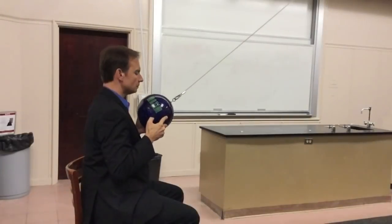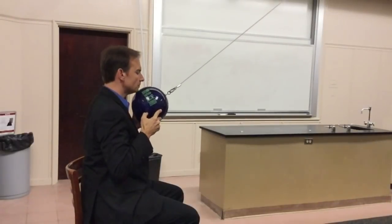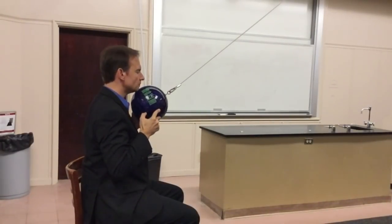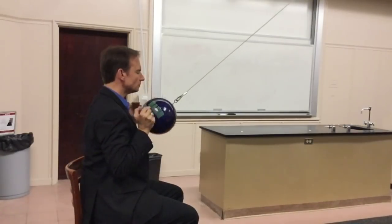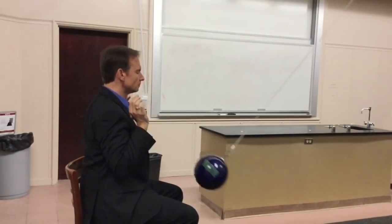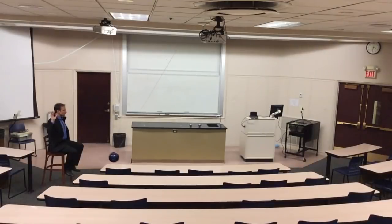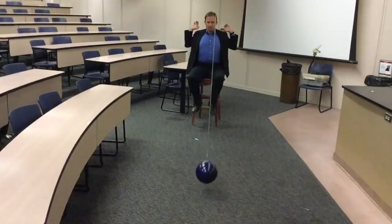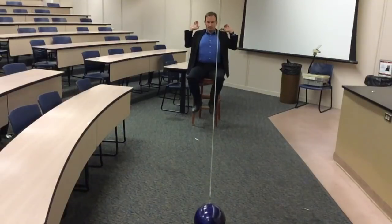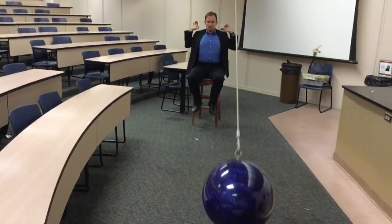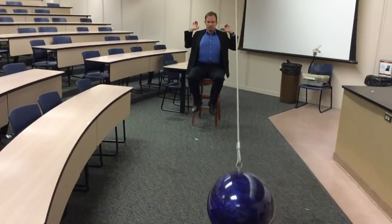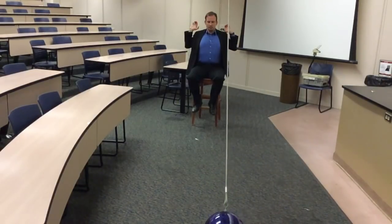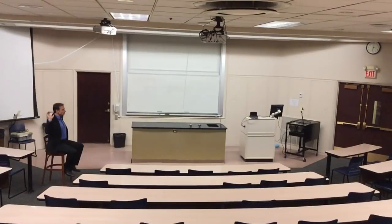I have a bowling ball attached to a cable that is mounted in the ceiling. I'm putting the bowling ball to my chin and I'm going to let it go. What's going to happen? The bowling ball starts at the height of my chin. It swings through the bottom of its motion, right up toward the other camera, and then it swings back. What can energy tell us about the end of this story?